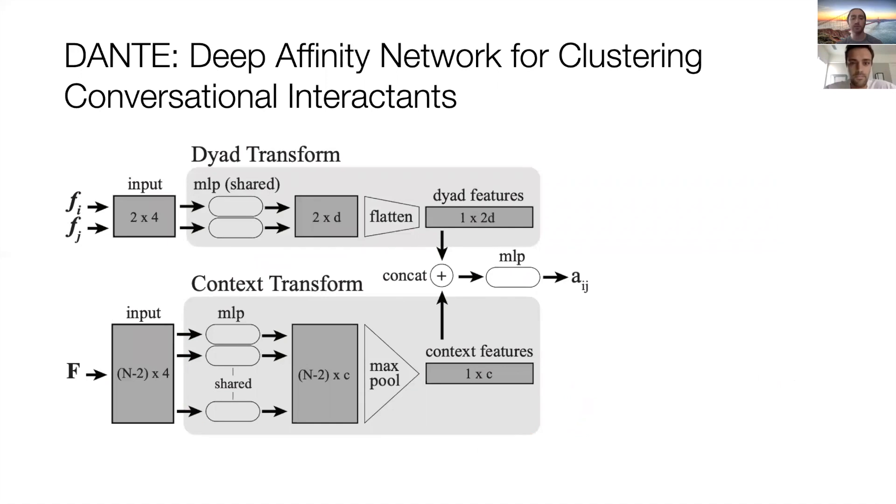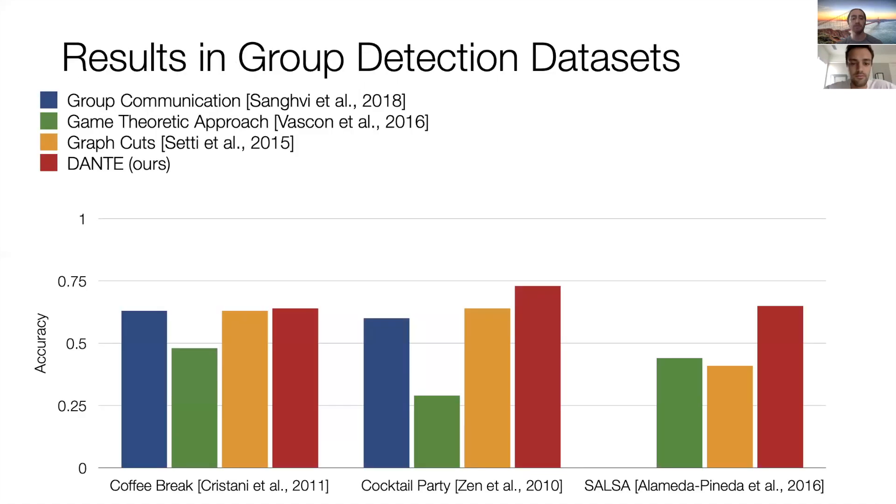A final multilayer perceptron combines the outputs of the dyad and context transforms to output a predicted affinity. Here are the results of our group detection pipeline on standard datasets with labeled ground truth groups. Our method is shown in red, and as you can see, we outperformed prior work on the cocktail party and salsa datasets.